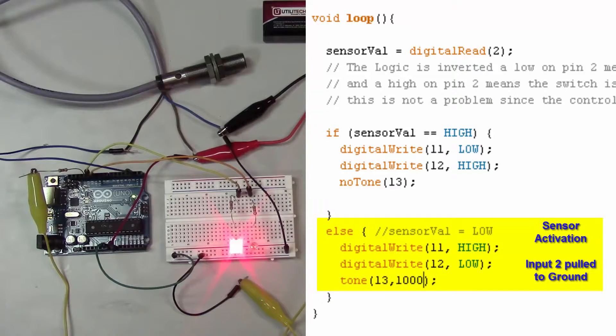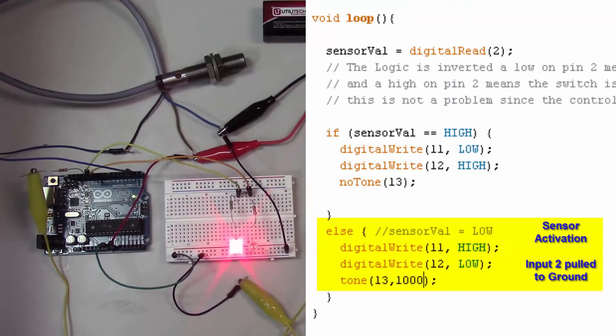If our sensor is activated, then we want pin 11 to be high, that's our green LED. We want pin 12 to be low, that's our red LED. And we want to make a tone on pin 13 of 1000 hertz. That's the tone that you hear.